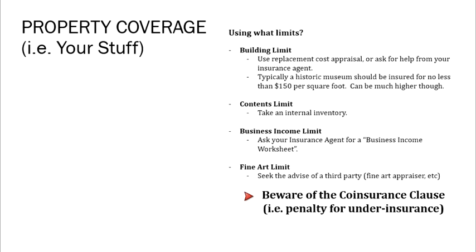Going back to what you want to insure your building for, there's something in the property insurance policy called coinsurance. Coinsurance is a penalty for underinsurance. If you have a claim and the insurance company determines you underinsured your building — you should have insured it for $250 per square foot but only insured it for $50 per square foot — they can assess a coinsurance penalty, which significantly affects your claims payout. Coinsurance is a bad thing, so make sure you have a healthy limit and try not to underinsure your building.